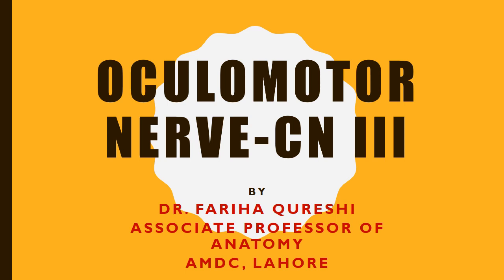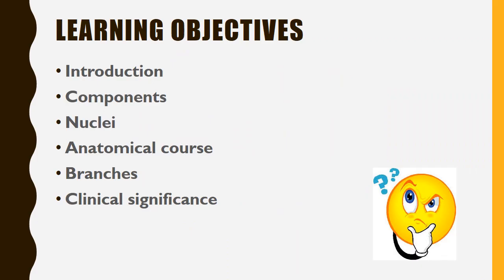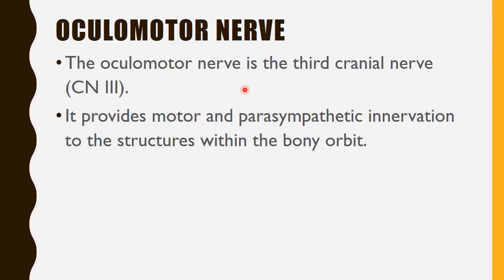Today's topic is the third cranial nerve, which is the oculomotor nerve. We'll discuss the different components of the oculomotor nerve, its nuclei, its course within the cranial cavity, its branches, and its clinical significance. The oculomotor nerve is the third cranial nerve and provides motor and parasympathetic innervation to the structures within the bony orbit.